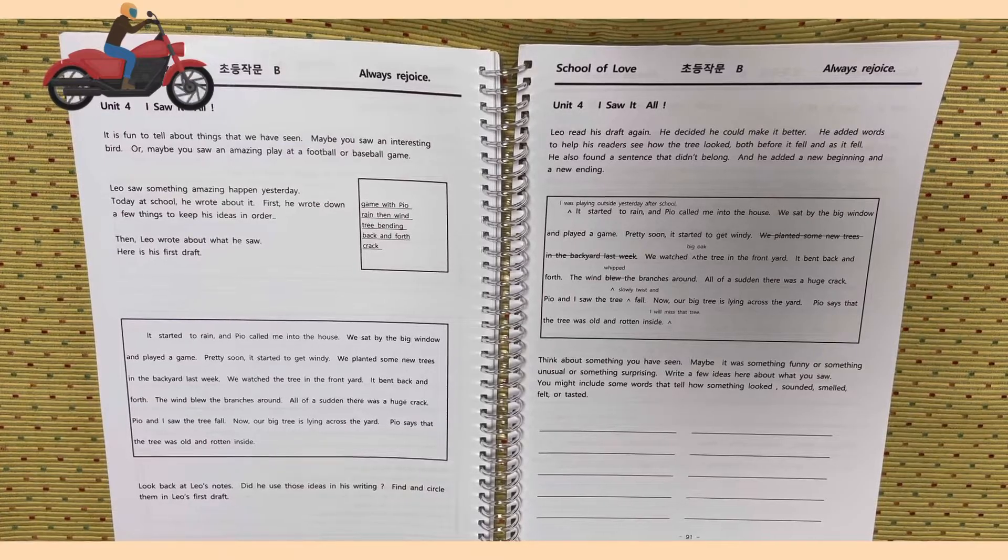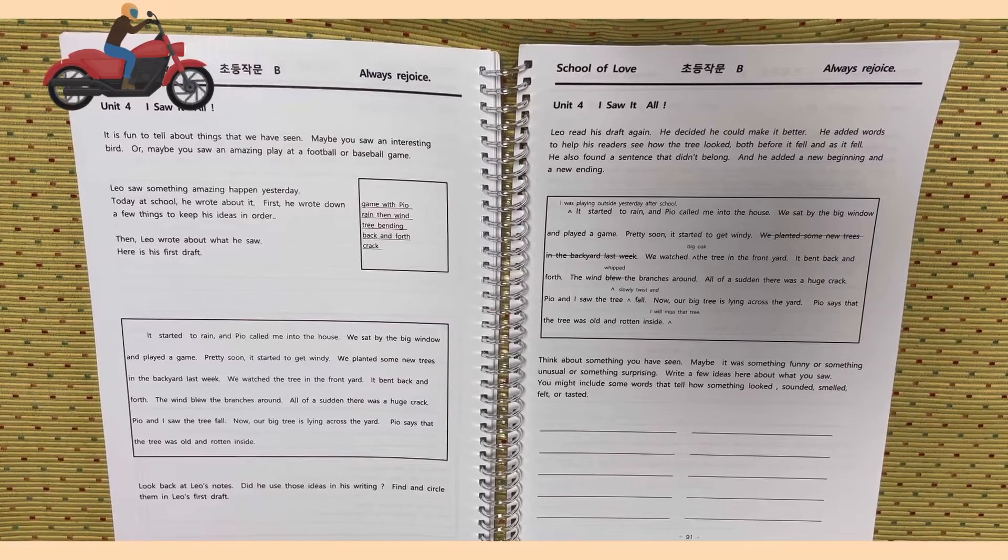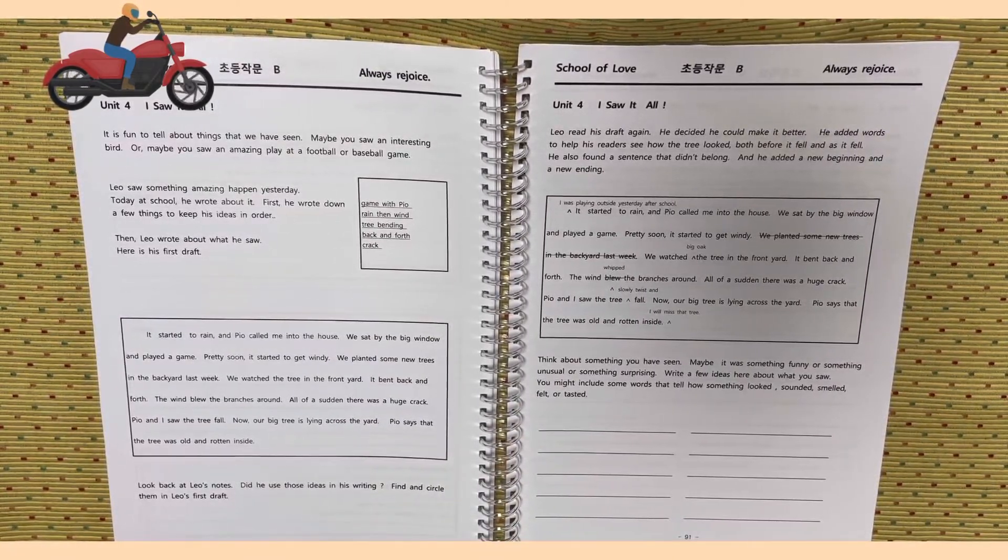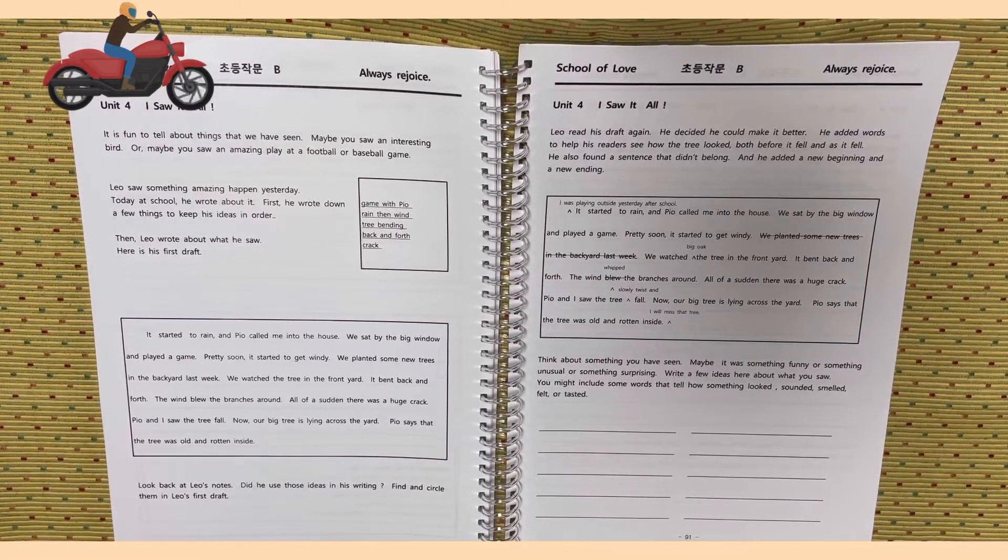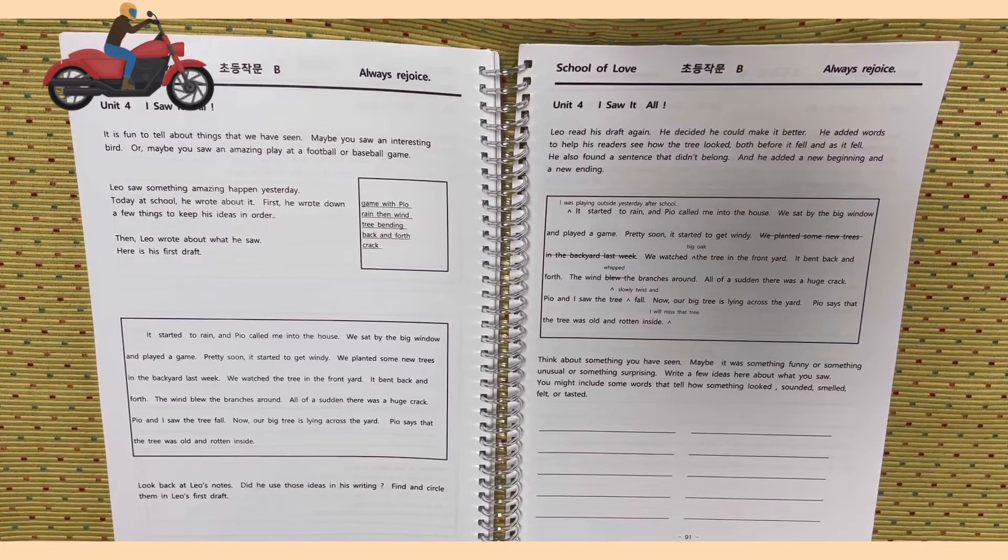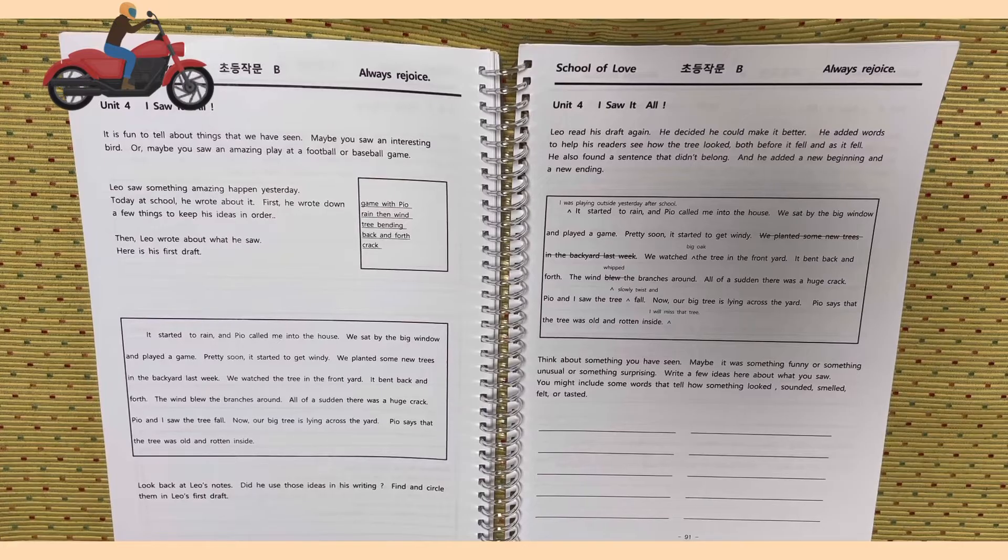Look back at Leo's note. Did he use those ideas in his writing? Find and circle them in Leo's first draft. Page 91, Unit 4. I saw it all. Leo read his draft again. He decided he could make it better. He added words to help his readers see how the tree looked both before it fell and as it fell. He also found a sentence that didn't belong and he added a new beginning and a new ending.